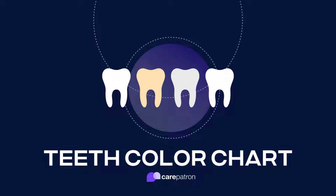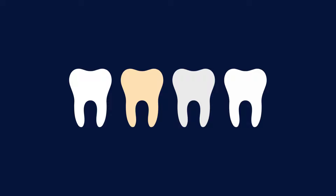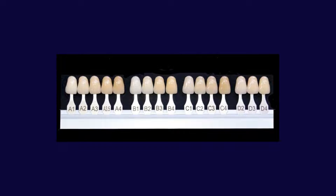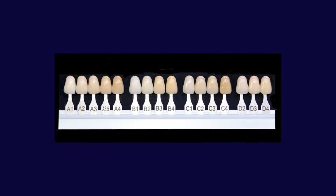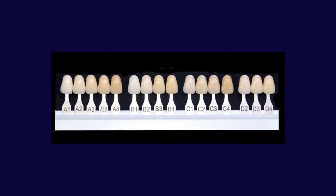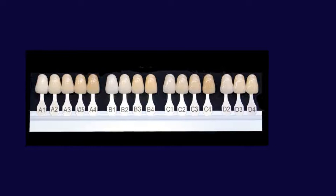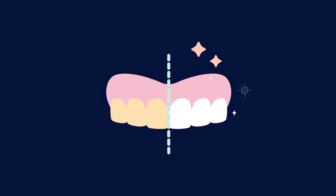What is a teeth colour chart? A teeth colour chart is an essential tool in the dental industry designed to provide practitioners and patients with a precise visual representation of various tooth shades. This comprehensive chart displays multiple colours starting from the purest white and progressing to deeper shades. Its meticulous design accurately identifies and matches a patient's natural tooth shade.